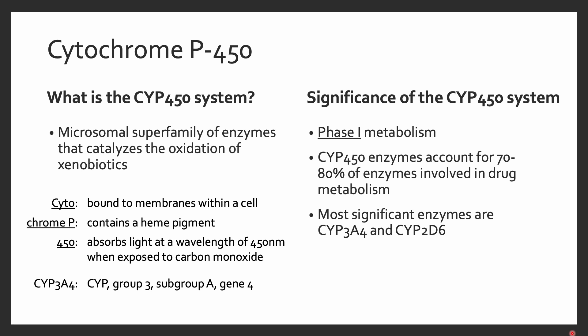Cytochrome P450 is a microsomal superfamily of enzymes that catalyzes the oxidation of drugs, placing it in phase one metabolism. Regarding nomenclature: 'cyto' refers to its membrane-bound location within a cell; 'chrome P' indicates it contains a heme pigment; and '450' reflects its light absorption at a wavelength of 450 nanometers when exposed to carbon monoxide. Each enzyme encoded by a cytochrome P450 gene is named CYP, followed by the group number, subgroup letter, and gene number — for example, CYP3A4, where 3 is the group, A is the subgroup, and 4 is the gene.